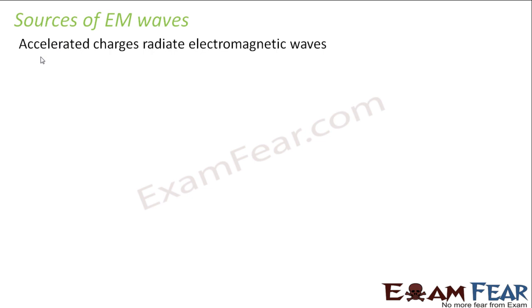Accelerated charges radiate electromagnetic waves — accelerated charges are basically the sources of electromagnetic waves. When a charge is accelerated, the electric field associated with the charge will also change accordingly. If the charge is at rest, the electric field will remain static and will not change with time, so it will not give rise to a magnetic field — there is no way to generate an electromagnetic wave. Similarly, if a charge moves with uniform velocity, the acceleration is zero, the change in electric field with time is also constant, and again there is no way to generate electromagnetic waves. So accelerated charges alone can generate electromagnetic waves.